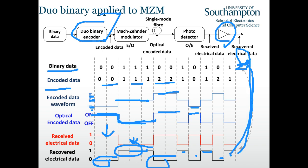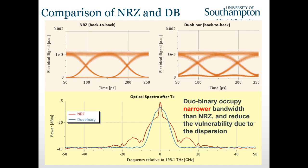The reason we go through the trouble of dual binary encoding and two-pi drive is that it produces a narrower spectrum, causing less interference to other optical channels. Sometimes even for NRZ we use two-pi drive because of the narrower spectrum. That's all for lecture six.